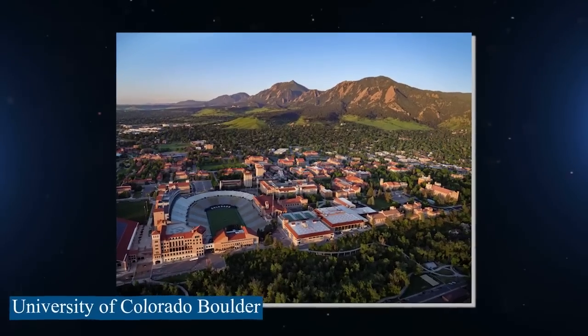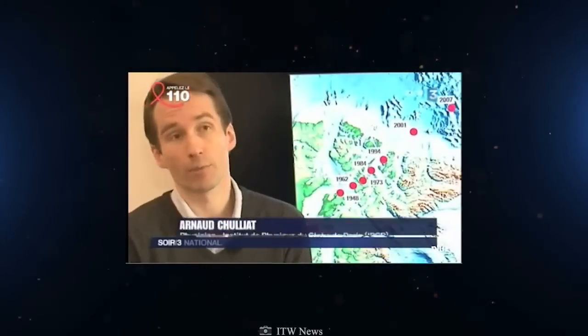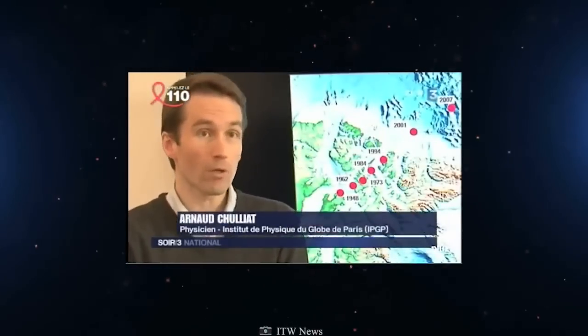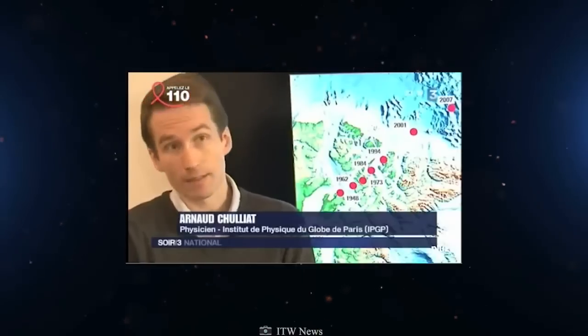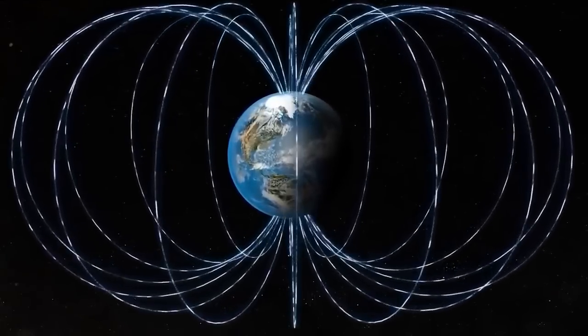Arnaud Chuliat, a geomagnetist at the University of Colorado Boulder and the National Oceanic and Atmospheric Administration's National Centers for Environmental Information says, the error is getting worse all the time. Part of the problem is that the North Pole is moving and part is that there are other changes going on deep inside the planet.